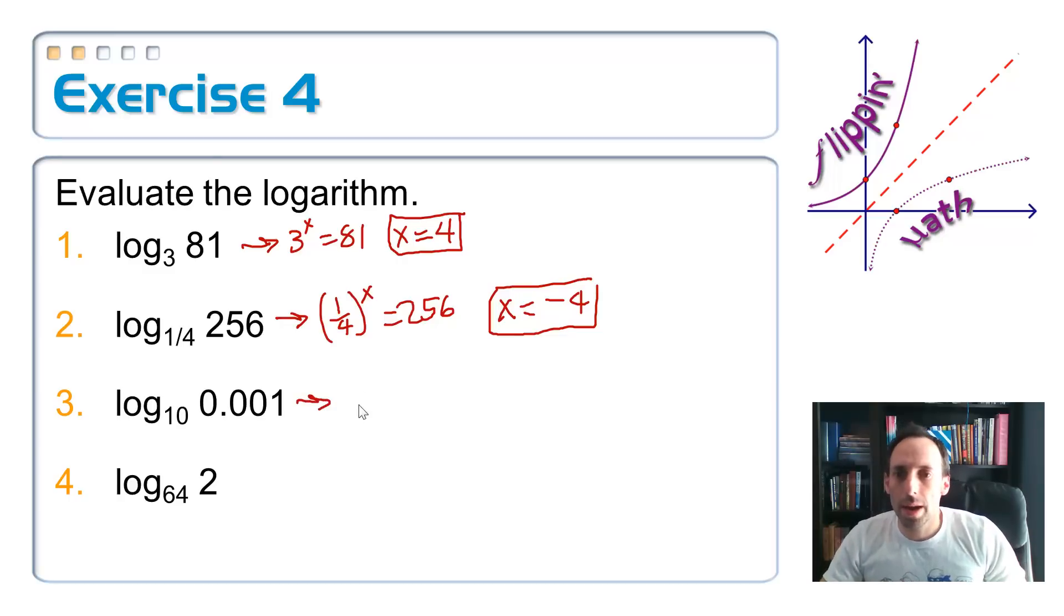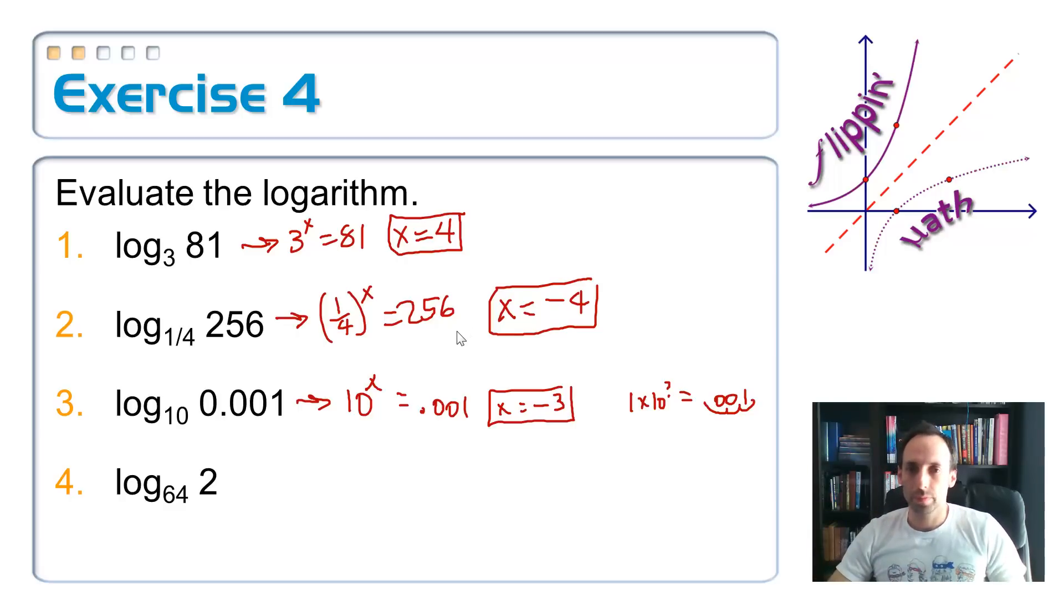Number 3. I'm asking myself: 10 to the what power is equal to 0.001? Well, think of this as like scientific notation. This is 1 times 10 to the what power is equal to 0.001. So let me just move the decimal place over and see: 1, 2, 3. x is equal to negative 3. It's negative because it's getting smaller.